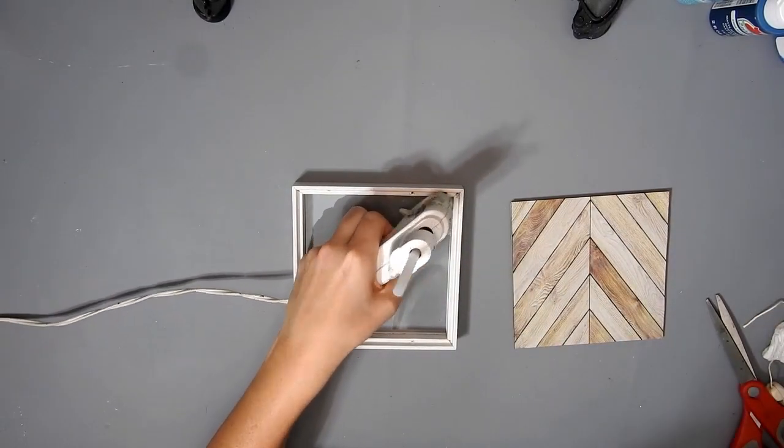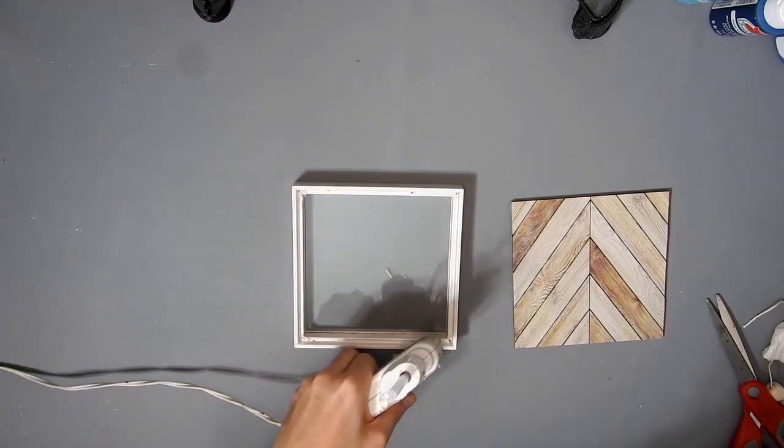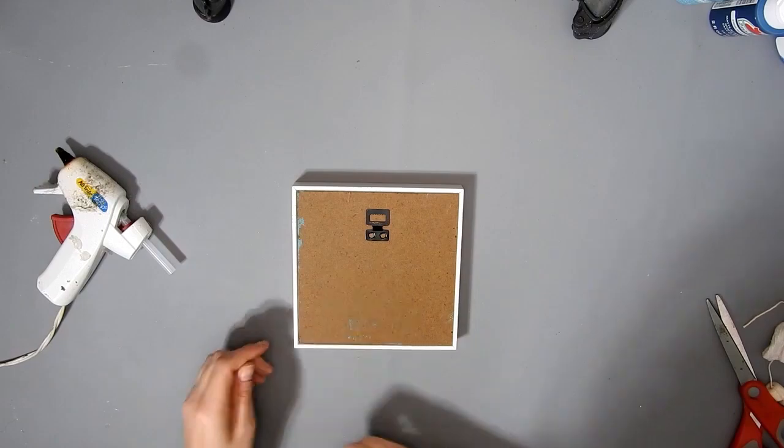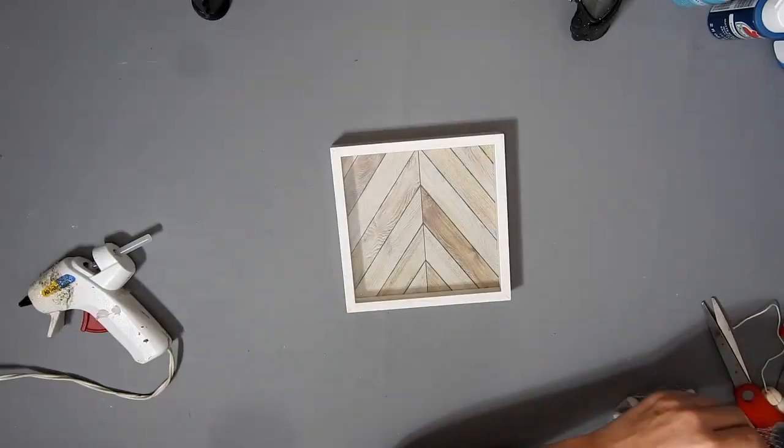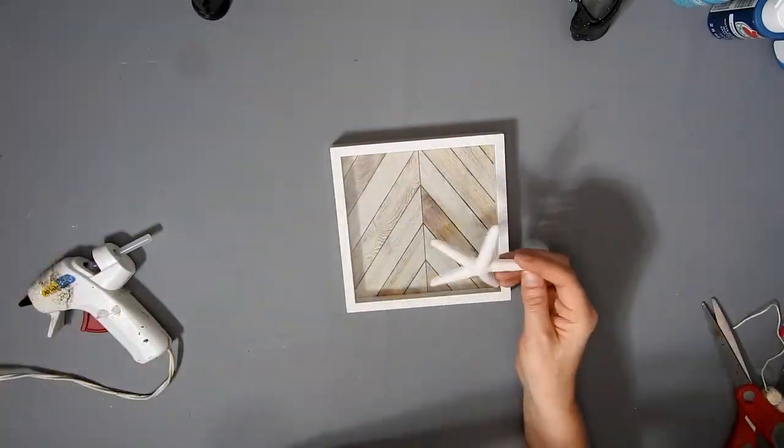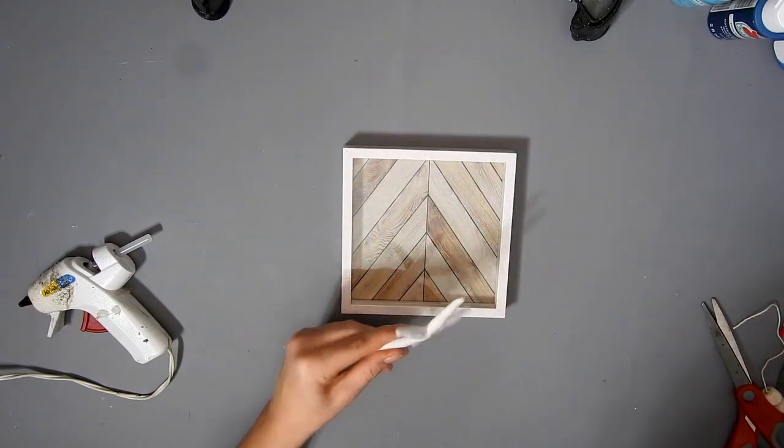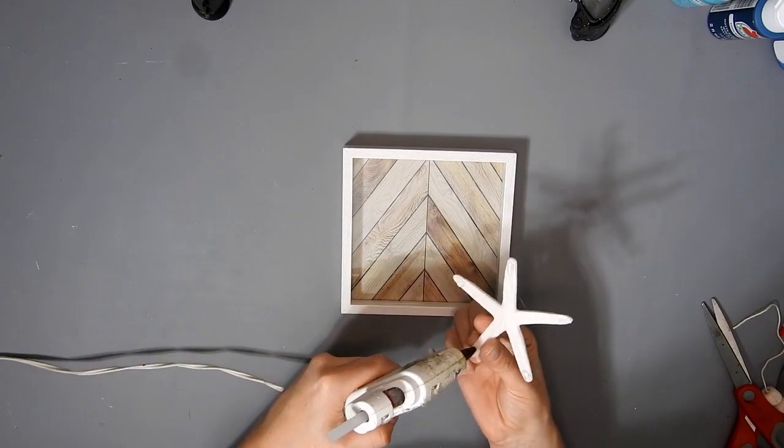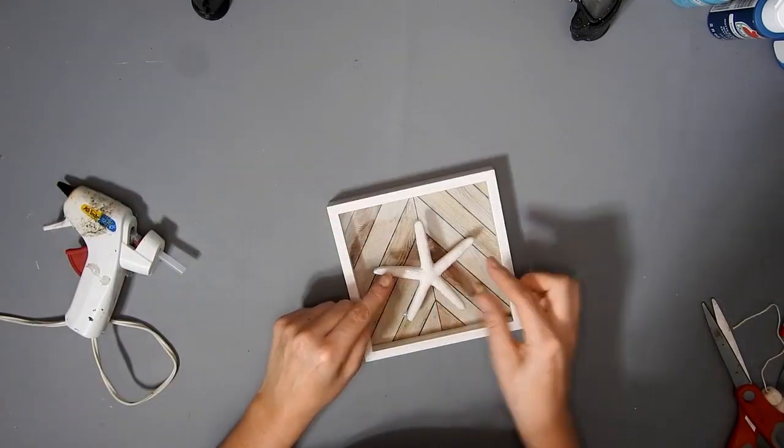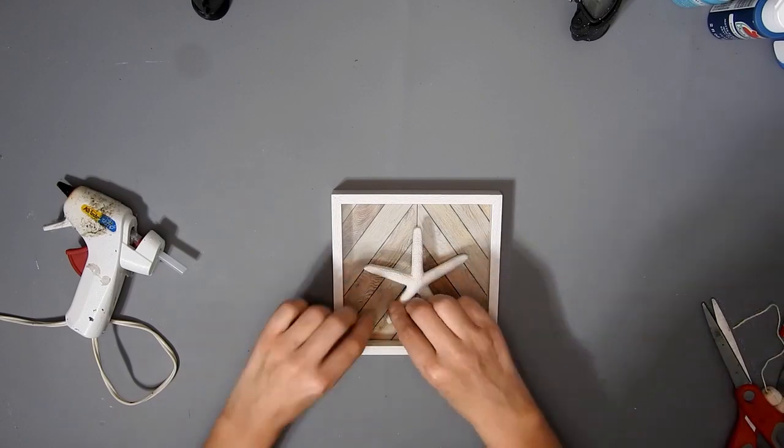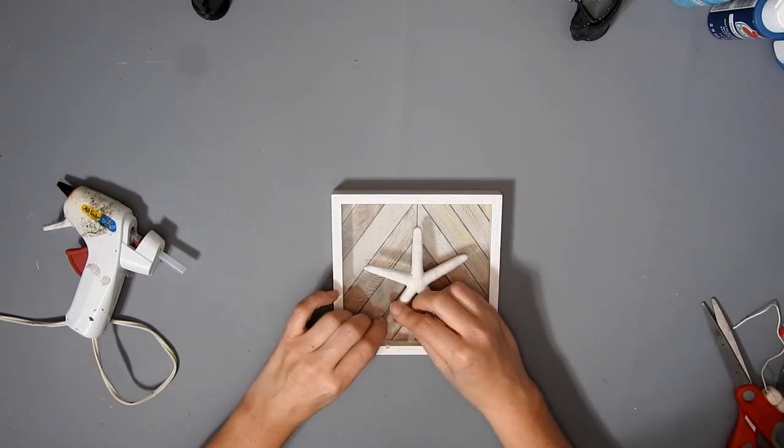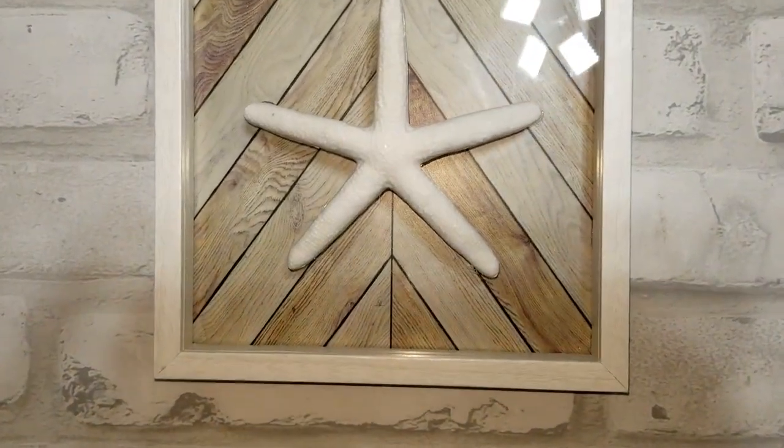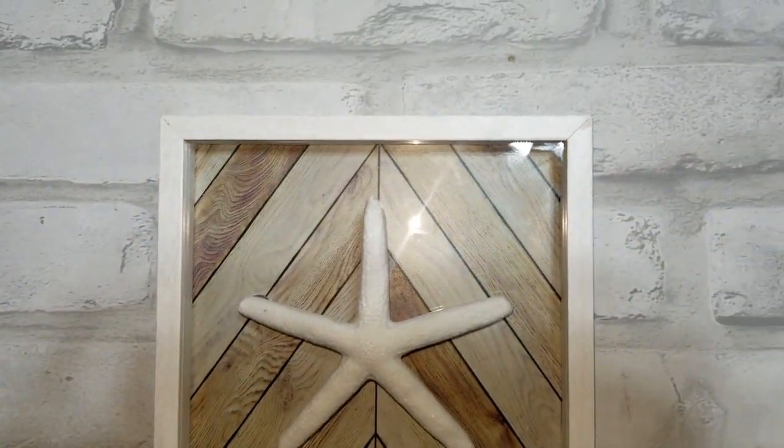I gave it a wee clean first. Then I have these wee starfish from Dollar Tree and I'm gonna glue one to the front. I thought it was gonna fit inside but it didn't, so I'm just gonna glue it to the front with some hot glue. I'm just removing any excess hot glue and I just thought this was really cute and simple, quick and easy DIY.